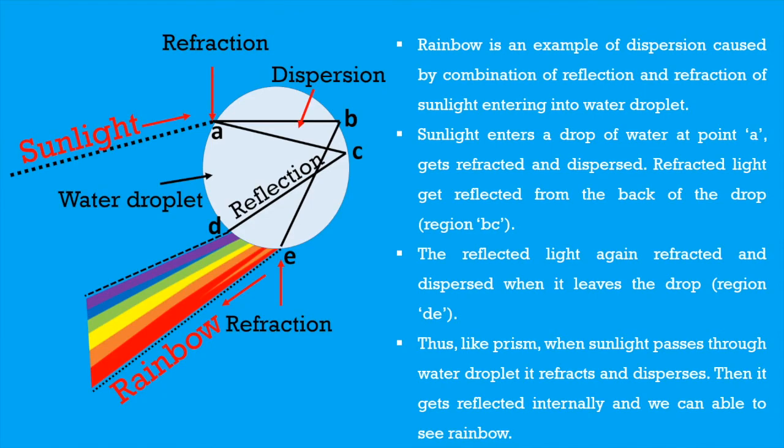Sunlight enters a drop of water at point A, gets refracted and dispersed. Refracted light gets reflected from the back of the drop, that is in the area BC. The reflected light again gets refracted and dispersed when it leaves the drop, that is region DE. Thus, like prism, when sunlight passes through water droplet it refracts and disperses, then it gets reflected internally and we can see rainbow.